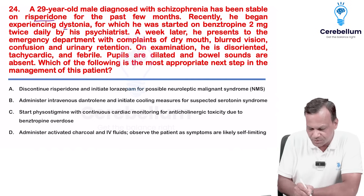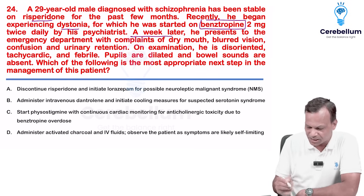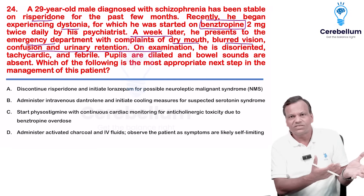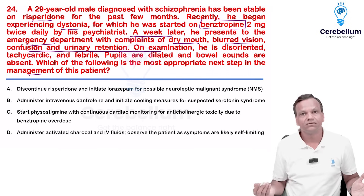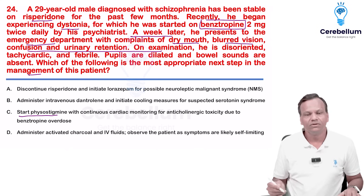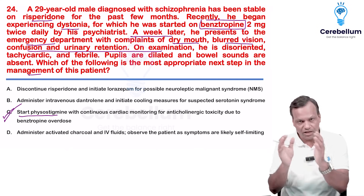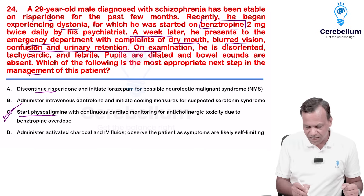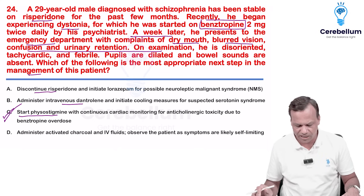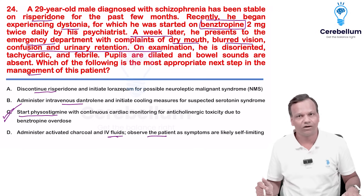A patient taking risperidone experienced dystonia for which benztropine was started. A week later, the patient presents with dry mouth, blurred vision, confusion, and urinary retention — anticholinergic poisoning. Management: physostigmine, the antidote for anticholinergic drugs like atropine. We will not discontinue risperidone; dantrolene is not indicated as this is not neuroleptic malignant syndrome; activated charcoal and observation alone are insufficient. The answer is physostigmine.